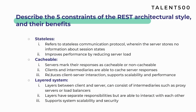Fourth is cacheable — the server has the ability to mark responses as cacheable or non-cacheable. Clients and intermediate layers are able to cache based on what the server instructs, which helps improve performance and scalability because cached data doesn't require repeated full requests, reducing client-server interaction. Fifth is layered system — layers between the client and server, such as load balancers or proxy servers, help improve the scalability and security of the whole system, and layers have separate responsibilities but can interact with each other.